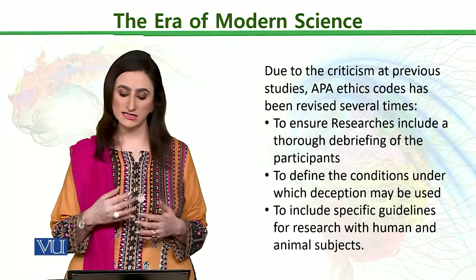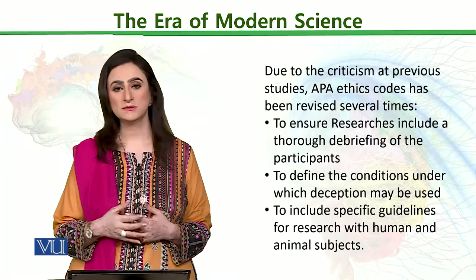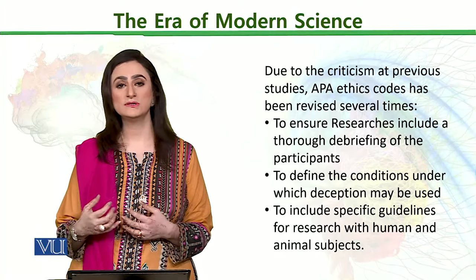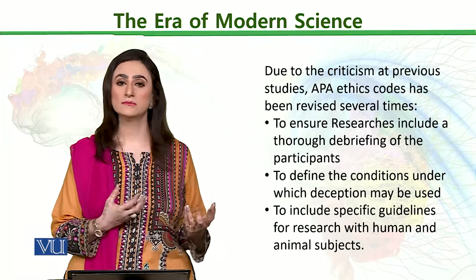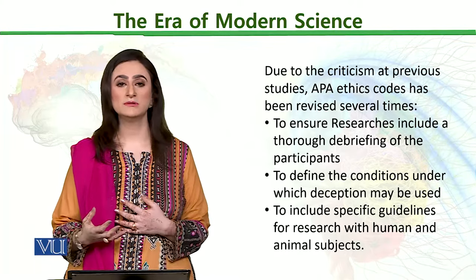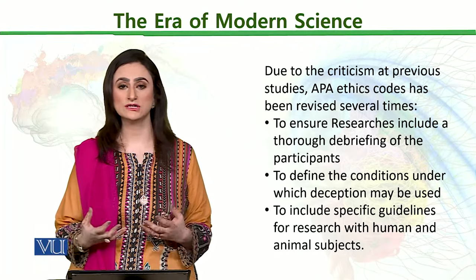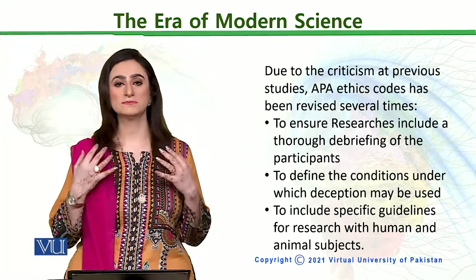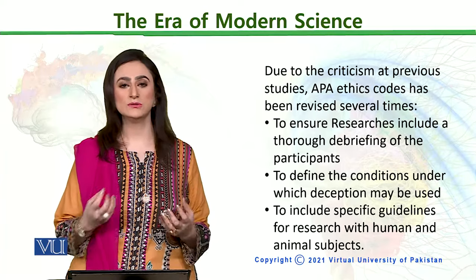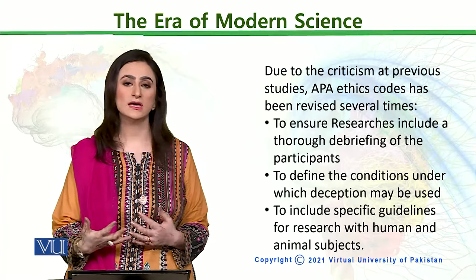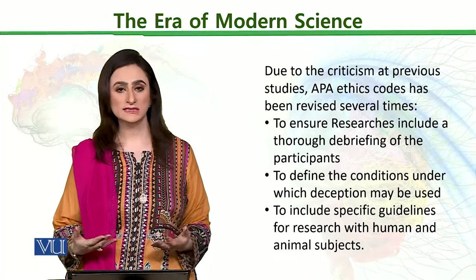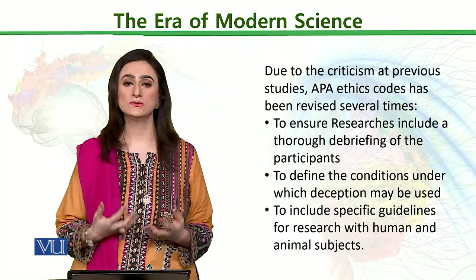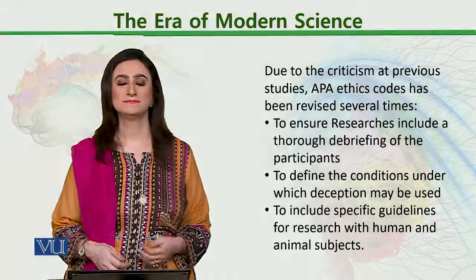Then, to include specific guidelines for research with humans and animal subjects — even today, if we talk about online research or animal research, we may need to look at cyber crime policies as well as the policies of animal welfare rights associations. So APA is a larger charter, a broader spectrum, that revises and updates the rights of animals and humans over the period of time, so that we can understand it in a broader sense and think equally about the welfare of both the human community and the animal community.